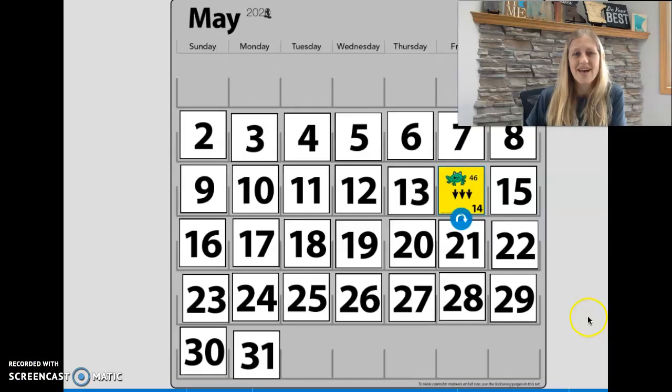So today, the calendar card shows Tad starting on number 46. He is moving down one block on the 120 chart, two blocks on the 120 chart, and then he is jumping down one more block. So in total, he is jumping down three blocks on the 120 chart.